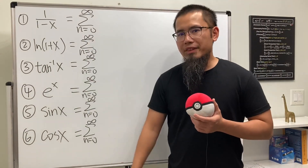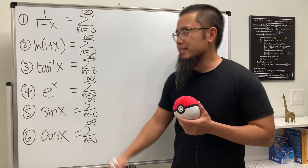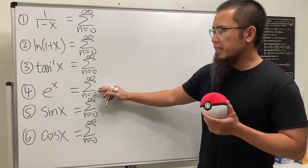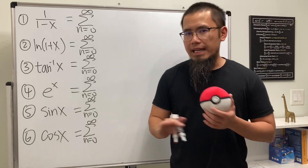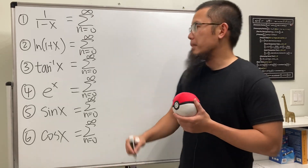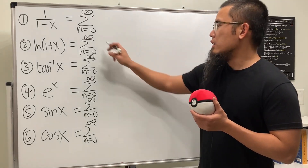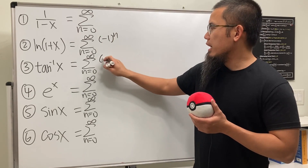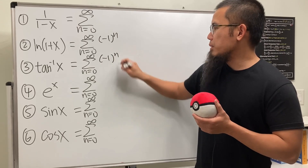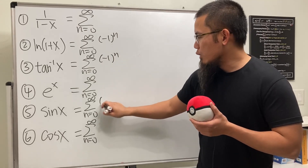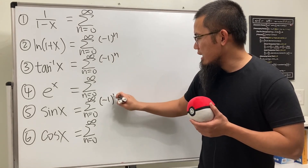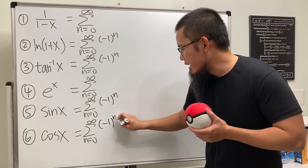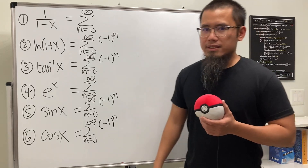The best friend 1/(1-x) and e to the x are not alternating, but the other ones are. So we put down negative 1 to the nth power for inverse tangent, natural log, sine, and cosine.